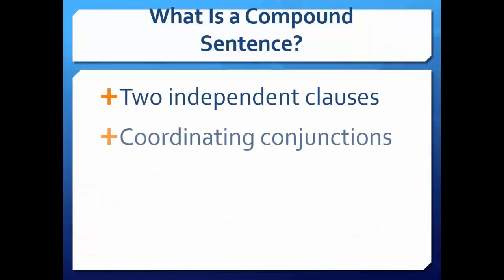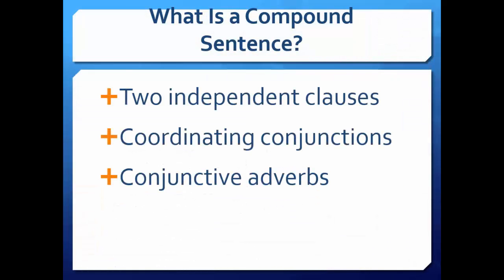A compound sentence contains two independent clauses joined by coordinating conjunctions or conjunctive adverbs. A comma usually precedes coordinating conjunctions, but in short sentences is not necessary.